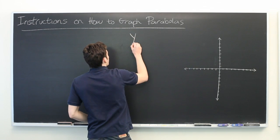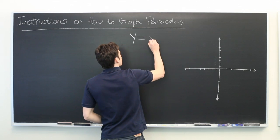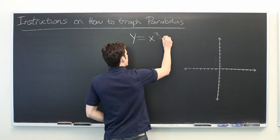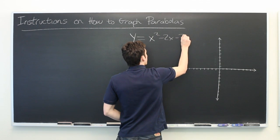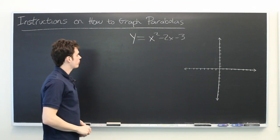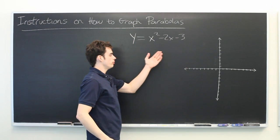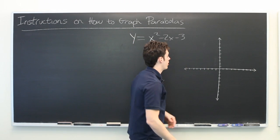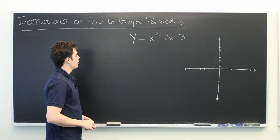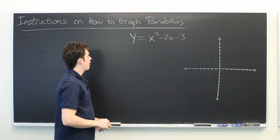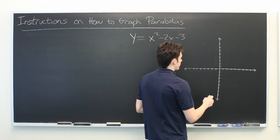Let's suppose that you're given a parabola that looks like y equals x squared minus 2x minus 3. What we want to do is to construct a graph of this parabola. The most important part of a graph of a parabola is the vertex.